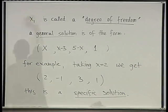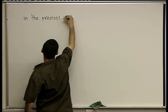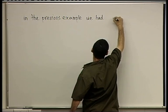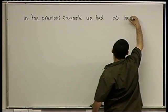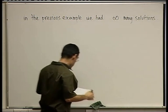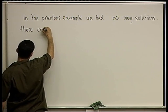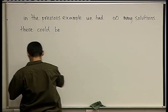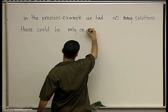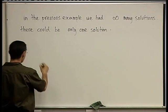Now that's not always the case. Let's remark that. So in the previous example we had infinitely many solutions, but that's not always the case. There could be only one solution. Here's an example. Look at the system.